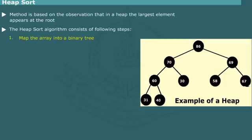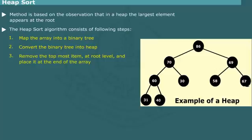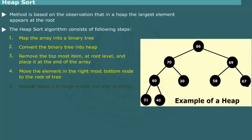Map the array into a binary tree. Convert the binary tree into heap. Remove the topmost item at root level and place it at the end of the array. Move the element in rightmost bottom nodes to the root of tree. Repeat step 2 through 4 until the tree is empty.